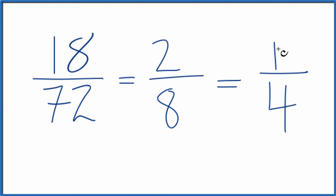Either way, you end up with the same fraction. 18 over 72 is simplified to 1 over 4.